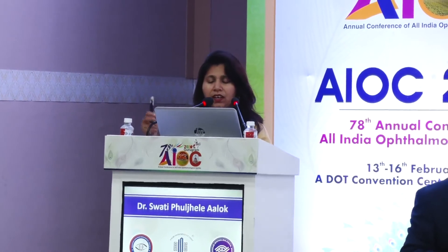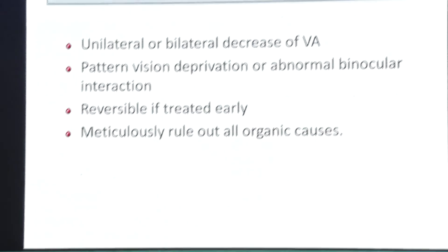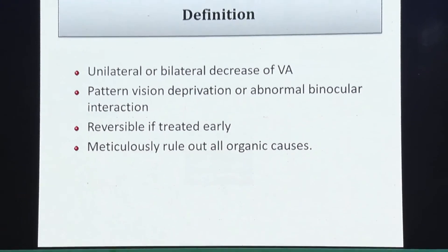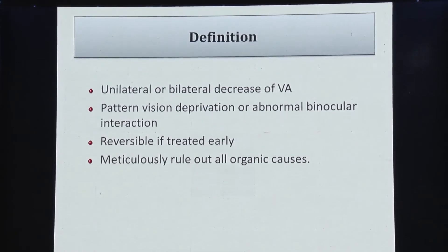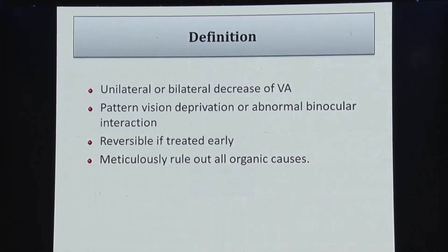Thank you for making me part of this program. I'll be speaking about management of amblyopia — the changing perspective of what we were doing earlier and what the practices are nowadays. The definition of amblyopia still remains the same: it's unilateral or bilateral decrease of vision either due to abnormal binocular interaction or due to pattern deprivation. It is reversible if treated early, but one has to rule out all other causes of poor vision in a child.